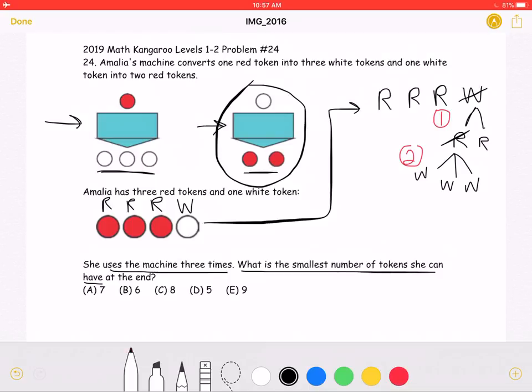Lastly, she'll do another white to red conversion because, as we said, we want to do as many of those conversions as possible to have the least number of tokens. So that will be the third time she uses the machine.